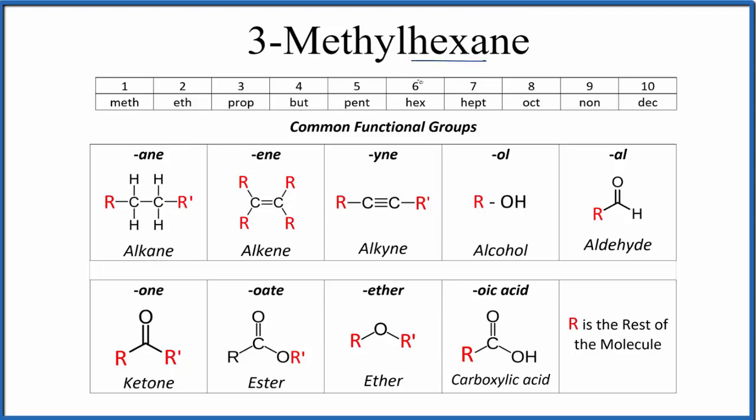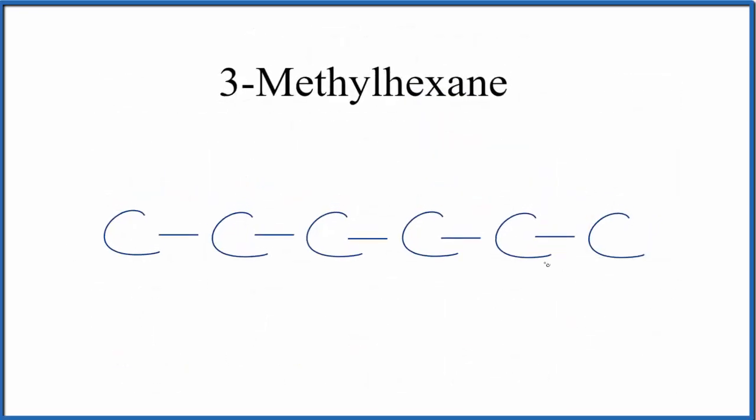And then hex, that means six. So we're going to have six of those single bonded carbon atoms. That'll look like this. So we have our six carbon atoms, we have our single bonds, and we can number them 1, 2, 3 through 6.